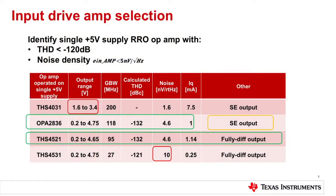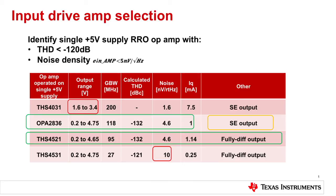What are those four parts? We have the THS4031, the OPA2836, the THS4521, and the THS4531. These are mostly high-speed parts — over 50 megahertz — which provide the precision needed to maintain effective resolution using the ADS8881. Out of those four, the first one — the THS4031 — operates from 1.6 to 3.4 volts, but we want to operate at 5 volts because the ADS8881 operates at 5 volts. So that takes it out.